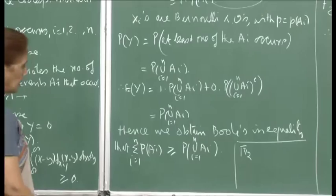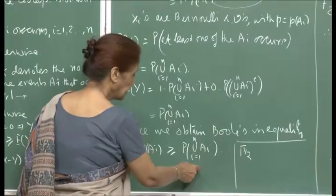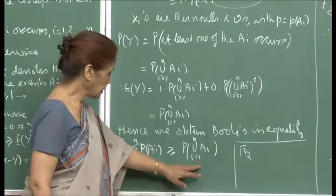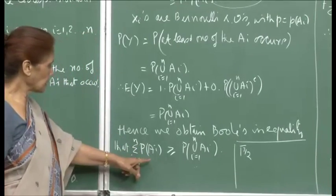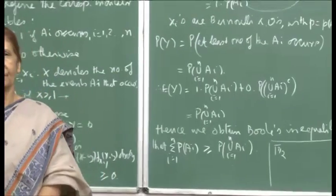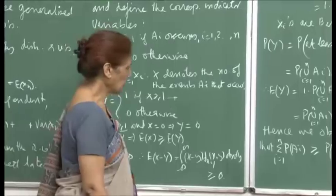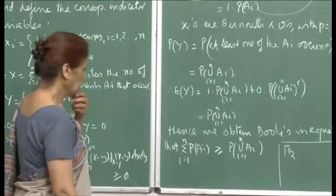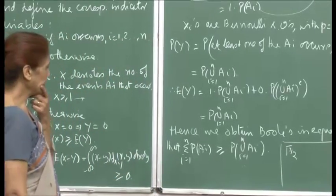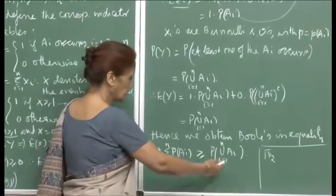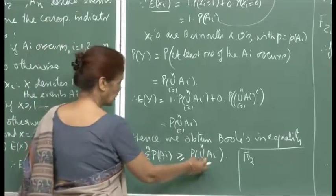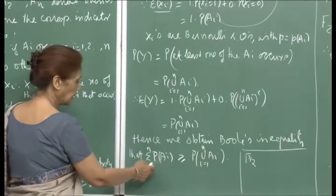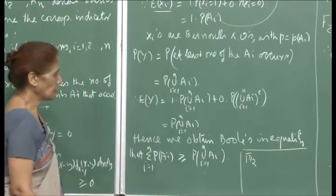In words, Boole's inequality says that the probability of occurrence of at least one event out of n given events is no greater than the sum of the probabilities of occurrence of the individual events. This sounds very reasonable, but we had to go through this process to derive the inequality rigorously.